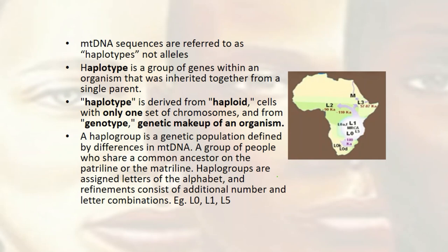In mitochondrial sequences, we usually don't use the word alleles — we use haplotypes. A haplotype is a group of genes coming from a single parent. Mitochondrial DNA is haploid, meaning only one set of chromosomes. Genotype means the genetic makeup, so haplotype is made up from haploid plus genotype. Once you name the sequences as haplotypes, you form what we call a haplogroup — a genetic population defined by differences in mitochondrial DNA.